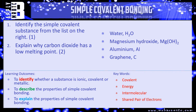Let's look at what the examiner can ask you. Question one: identify the simple covalent substance from the list — water (H2O), magnesium hydroxide (Mg(OH)2), aluminium, and graphene. Which one only has non-metals and only a few atoms, remembering the exceptions for giant covalent? Question two: explain why carbon dioxide has a low melting point. Pause the video and have a go.